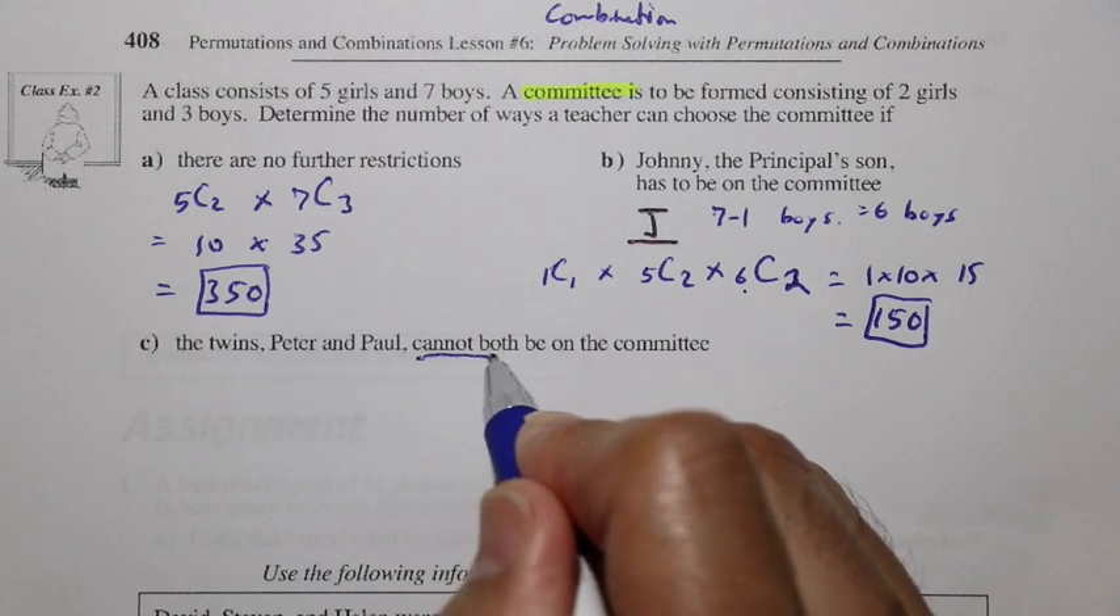In C, the twins Peter and Paul cannot both be on the committee. Well, if they cannot both be on the committee, let's use a complement in this case. Let's first try saying the number with no restrictions, just taking a committee from the 12 people that are there. And then we're going to subtract the number where both Peter and Paul are on the committee. If that's the case, then if we've taken out all the possibilities in which Peter and Paul are on the committee, then what's left would be that they are not both on the committee.